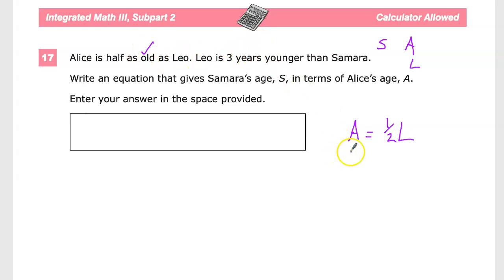The other thing we know, Leo is three years younger than Samara. So, Leo is equal to Samara minus three. So, that's what we have so far. Now, the thing that's nice about having variables is that we can manipulate these statements to say different things, or we can change the point of view.